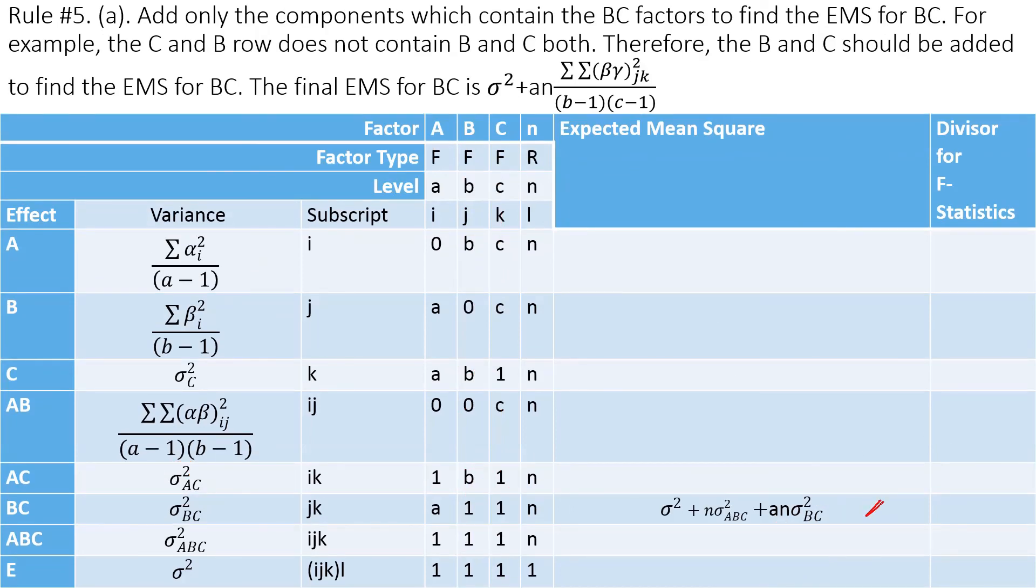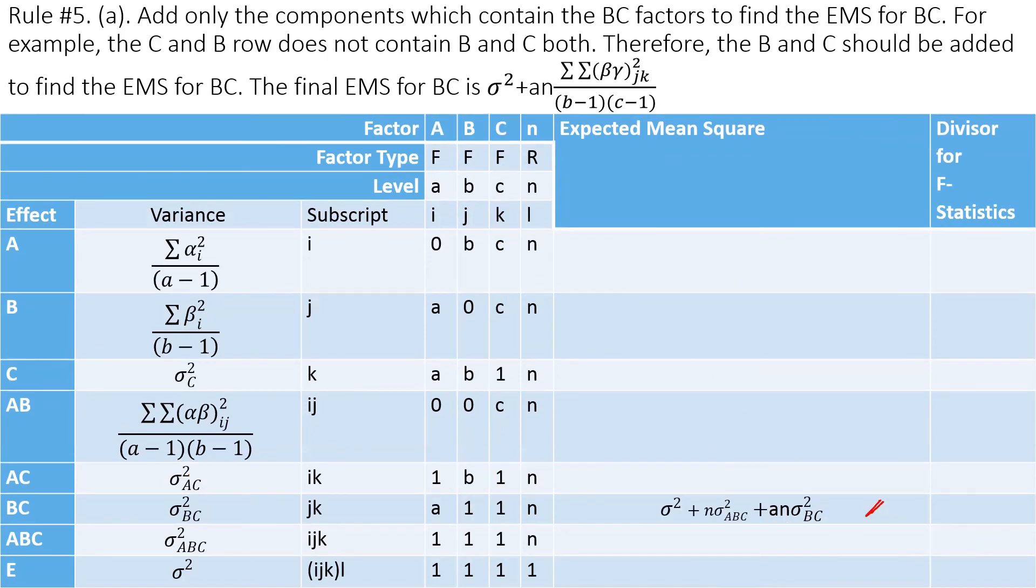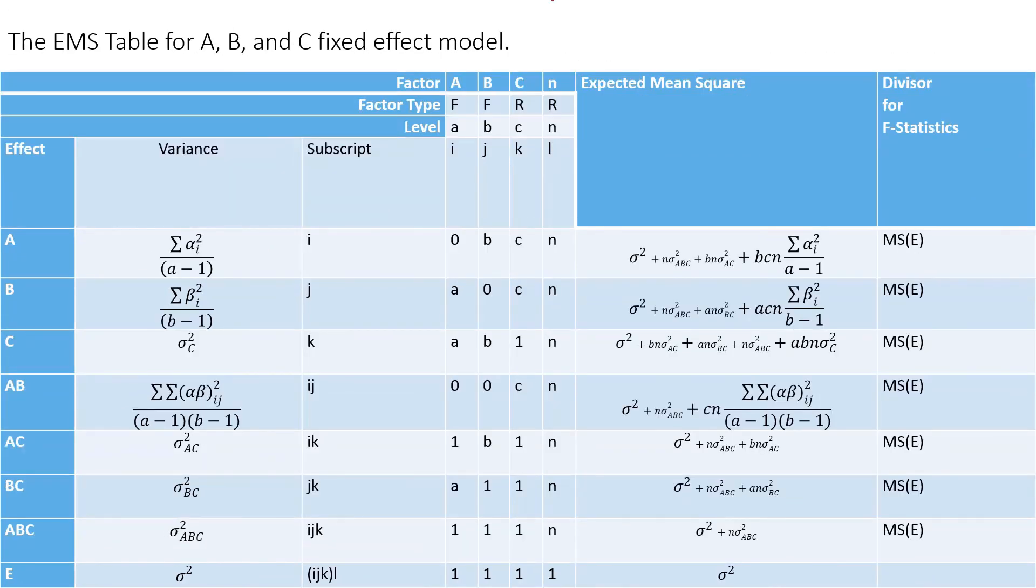So sigma square plus N sigma square ABC plus N sigma square BC, like that. So we got that from rule 5. So basically add all of them that contain both BC together, not just one. If I can go back, you can see this did not come because it doesn't have C, only B. This one has only C, no B. So both has to be there. Now we can get the rest of the tables like that. So that's it about the mixed effect, one fixed, two.